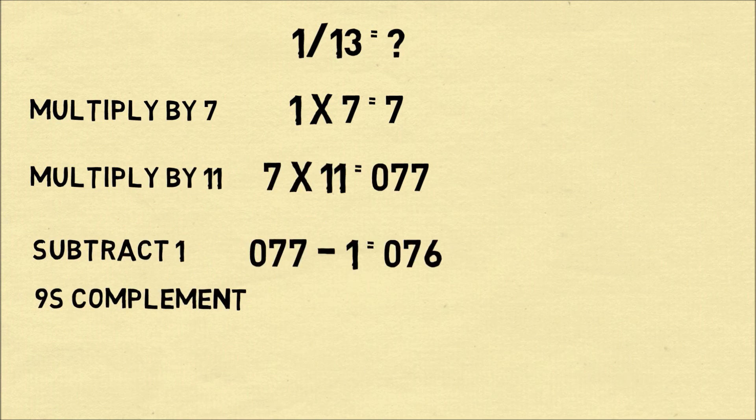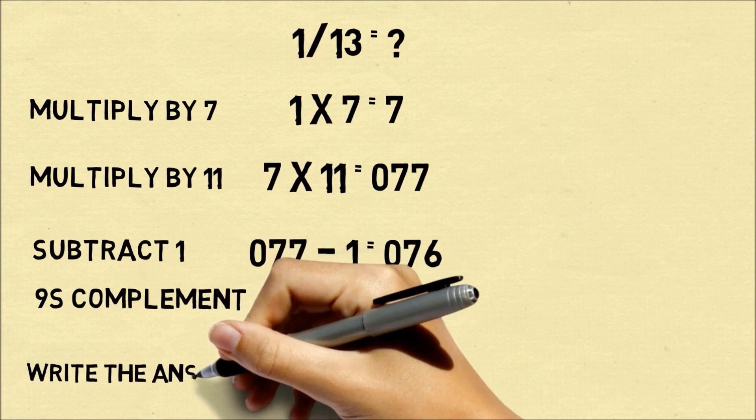To get the next three digits, we take the 9's complement of each number. 9 plus 0 is equal to 9, 2 plus 7 is equal to 9, and 3 plus 6 is equal to 9. So those are the next three digits in the decimal representation.